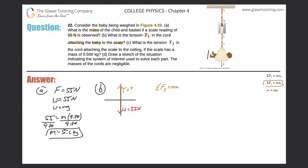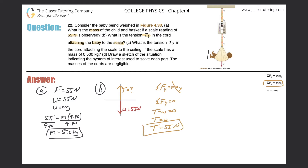This is a y-dimension problem, so we use Newton's second law: sum of forces in y equals ma_y. Is there any acceleration? No — the baby is stationary, so ma_y equals zero. The forces in the y-direction are positive tension and negative weight, so T minus W equals zero, meaning T equals W equals 55 newtons.